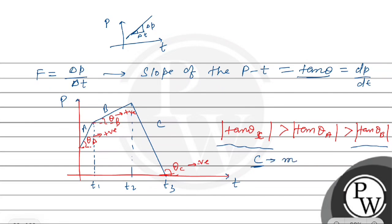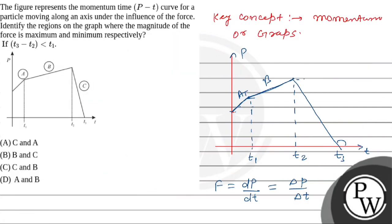So the final answer is: section C has maximum magnitude of force, and section B has minimum magnitude of force. The answer is option C — maximum for C and minimum for B. Hope you understood it well. All the best.